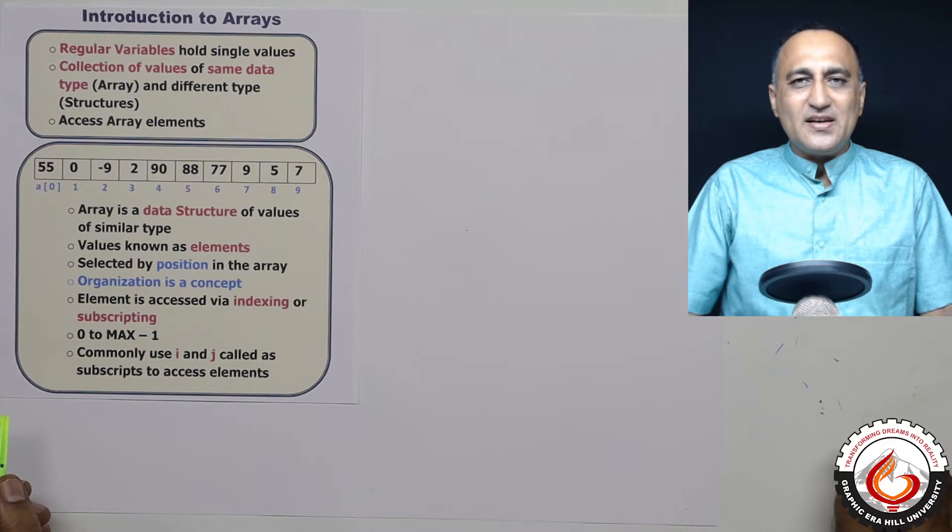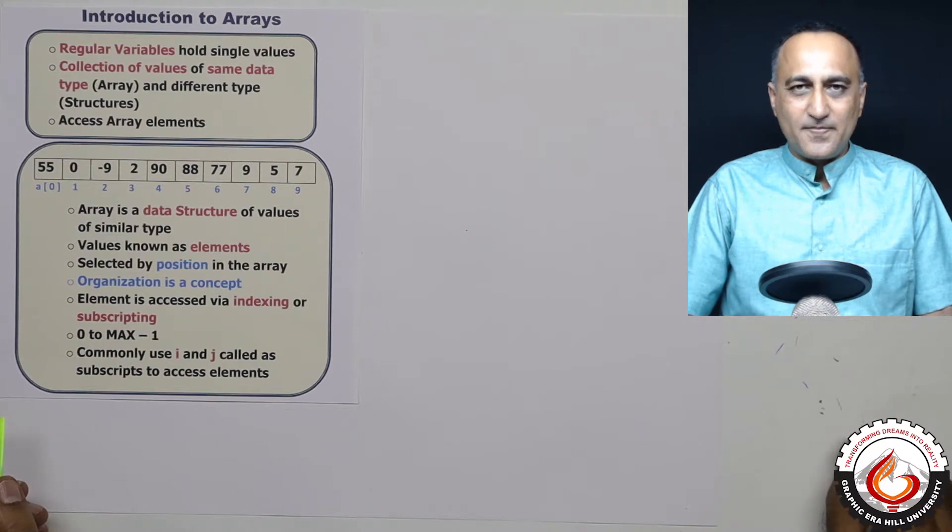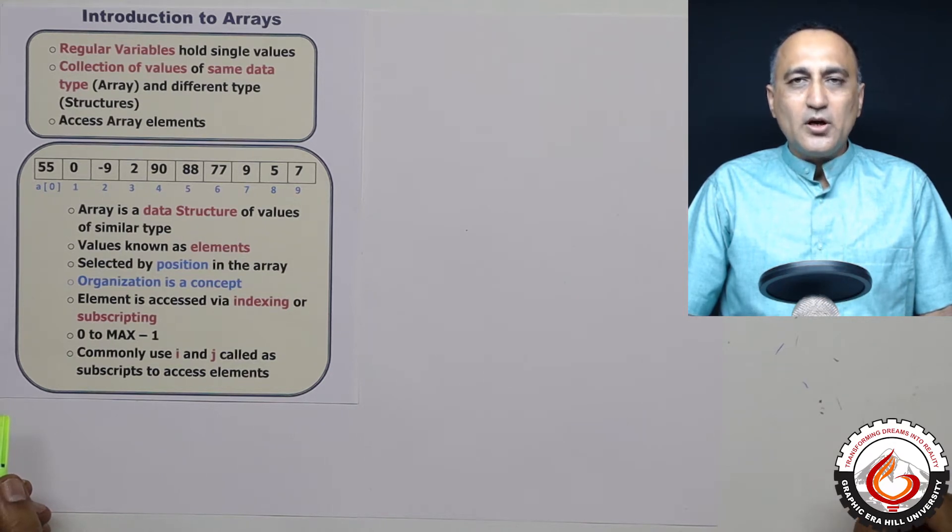So far we have seen or used regular variables like integer i, j, a, b, etc. These variables i, j, a, b were able to hold only a single value. They could not hold more than one value in a single variable.